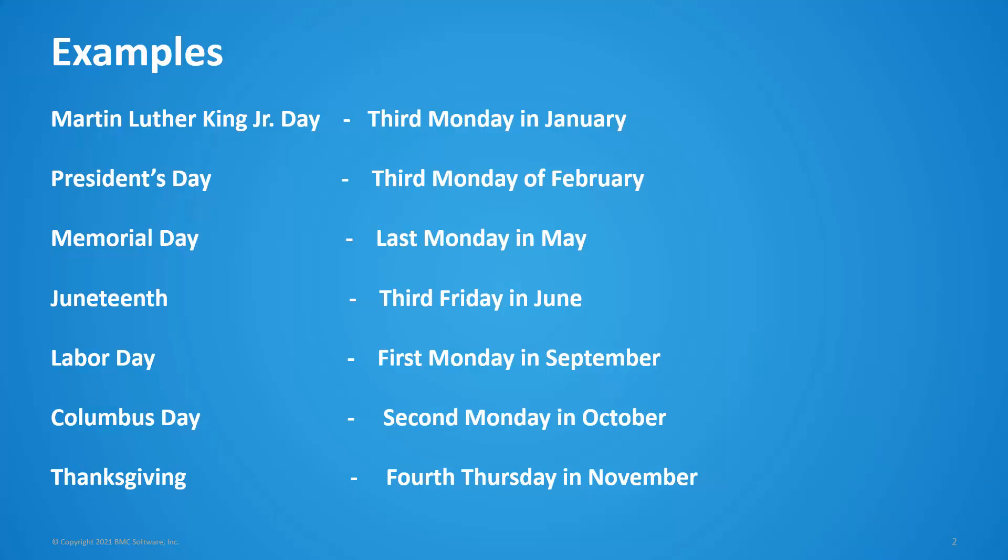Martin Luther King Jr. Day falling on the 3rd Monday of January. President's Day falling on the 3rd Monday of February. Memorial Day falling on the last Monday of May. Juneteenth falling on the 3rd Friday in June. Labor Day falling on the 1st Monday in September. Columbus Day falling on the 2nd Monday in October. And Thanksgiving falling on the 4th Thursday in November.